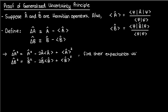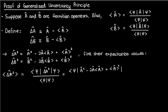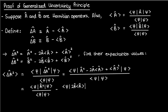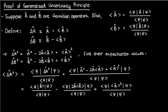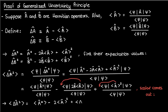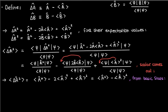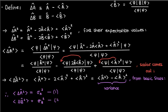In the next step, we find the expectation values of these squared operators, starting with ⟨Δâ²⟩. After plugging in our expression and expanding using linearity, we carry out algebraic simplification to arrive at the expectation value of Δâ². From basic statistics, this equals the variance σ_a². I'll call this equation 1. By the same procedure, the expectation value of Δb̂² equals σ_b². This is equation 2.